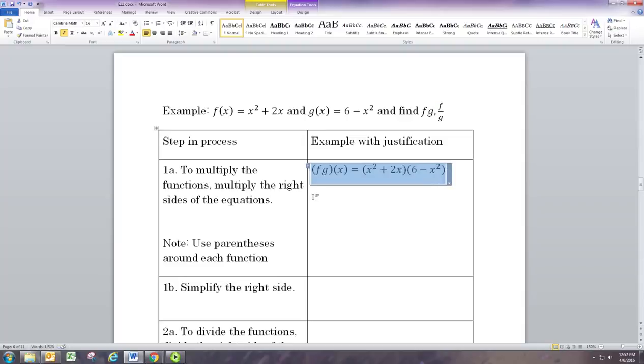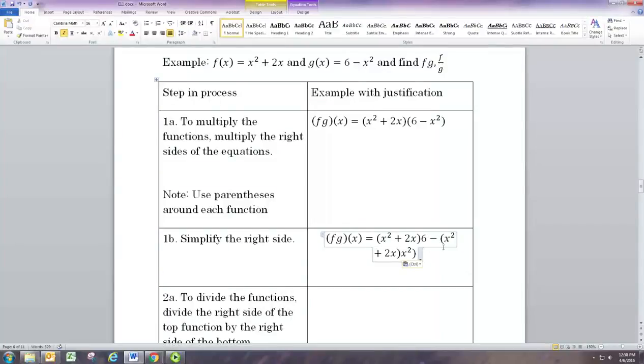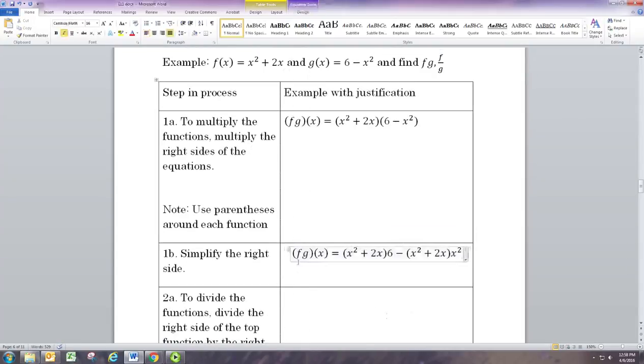We could simplify this since we have two polynomial terms. We can go ahead and distribute. And if we distribute this to the 6, and then again to the x squared, we'll get that.